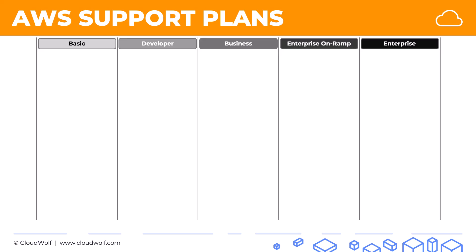In AWS there are five support plans ranging from basic to enterprise, and as you go from left to right they become more expensive but you also get more features. You have to learn these off by heart and know for the exam. Hopefully this image will help you remember them in a structured way.